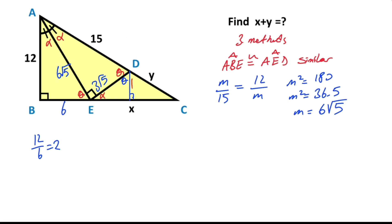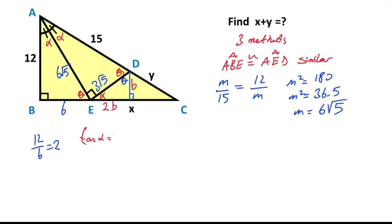That means for this smaller triangle the ratio of the length must also equal 2. Or you can think of it this way: for triangle ABE, if you calculate tangent alpha, tangent alpha equals 1/2. That means for this triangle tangent alpha must also equal 1/2.